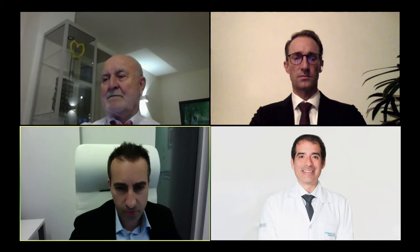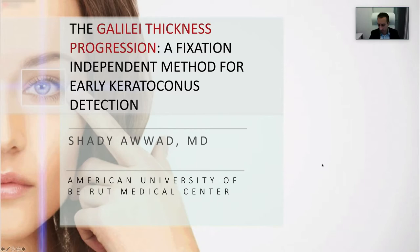We will leave questions and answers to the very end, but you are encouraged to put your comments and questions throughout as we go. We will answer them at the very end for the sake of time. Without further ado, I will start with the first talk: the Galilei Thickness Progression, a fixation-independent method for early keratoconus detection.